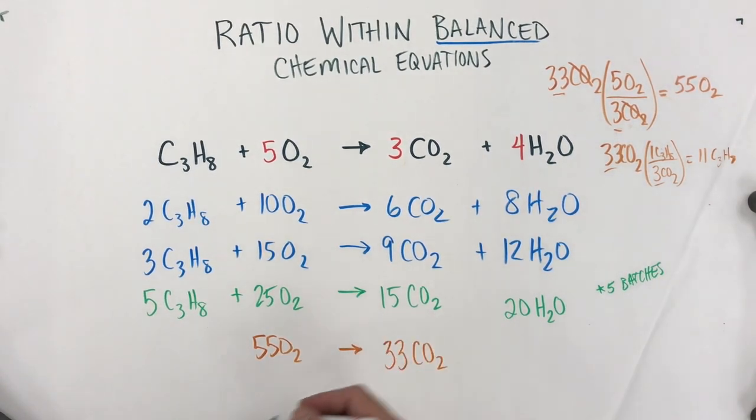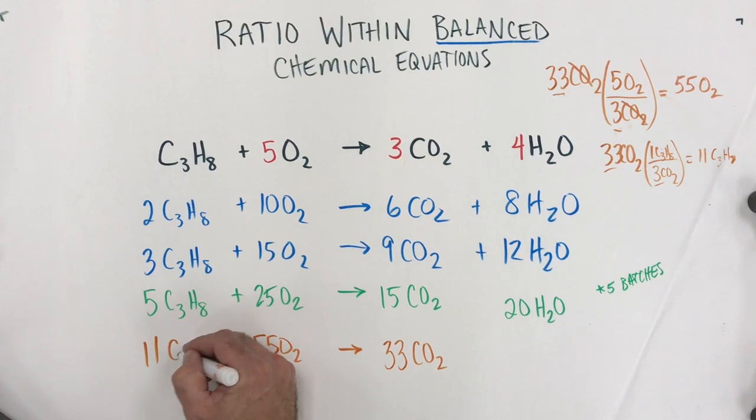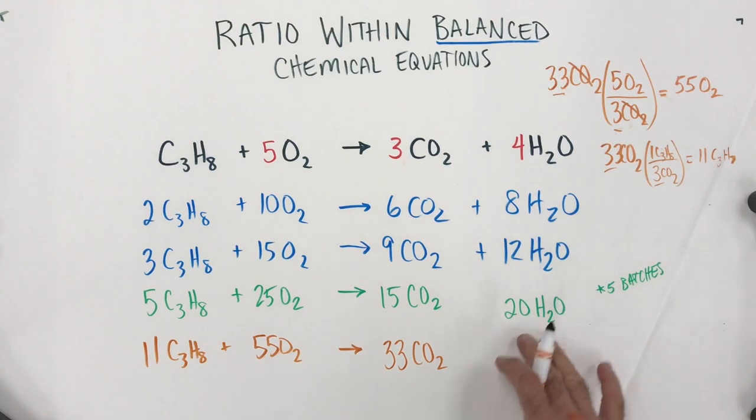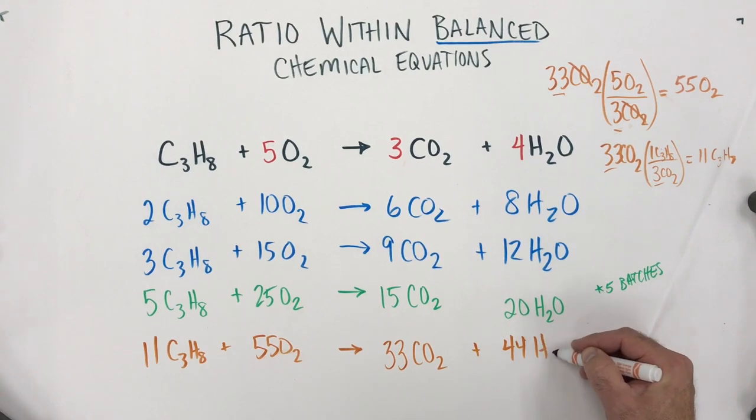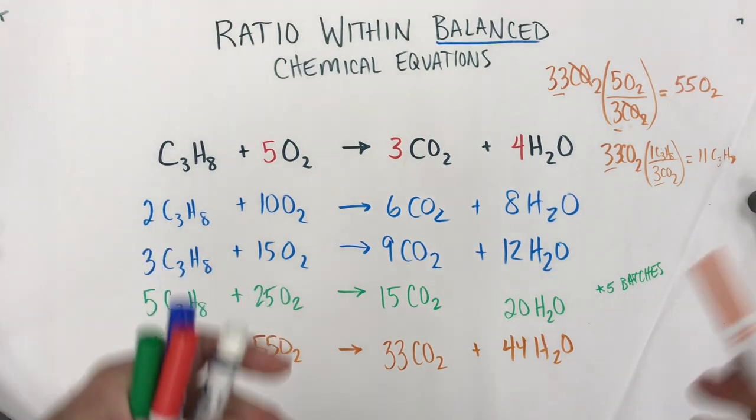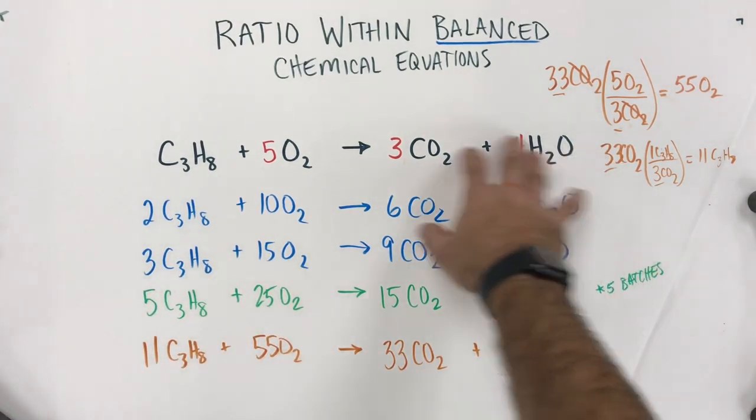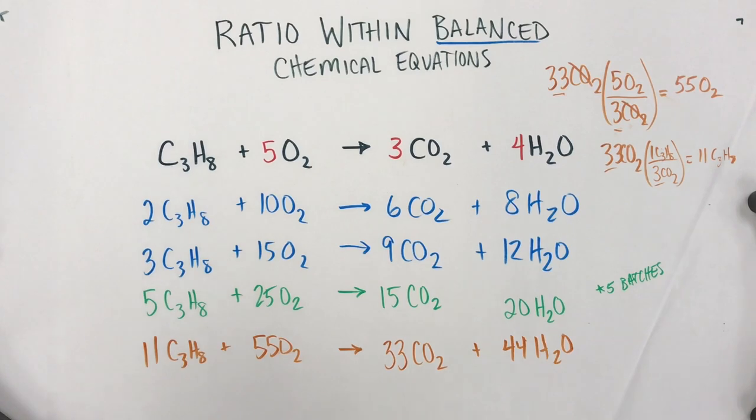So, I can come over here and say, that would take 11 propane. And then, we already have done this enough to see that again, 11 batches. So, 11 times the 4 is going to make 44 waters also. It just gives us a way to make predictions and calculations using these chemical equations. But, remember, it has to be a balanced chemical equation to start with or this doesn't work.